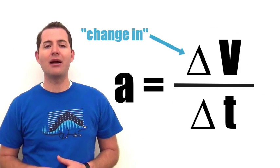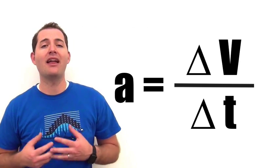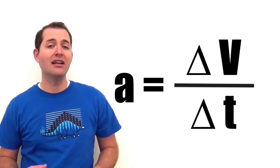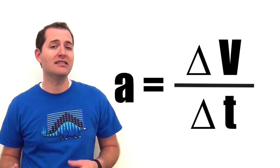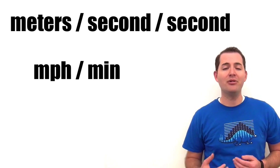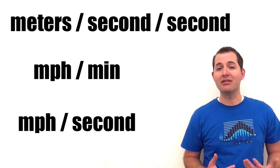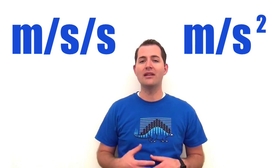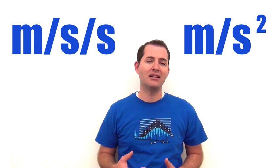We show acceleration by representing the change in velocity divided by the amount of time it took for that velocity change. In this example, that is 4 meters per second change in velocity every second. There are lots of different units we can use for acceleration — for example, meters per second per second, or it could be miles per second, or any combination of a change in velocity divided by time. The standard units of acceleration in physics are meters per second per second, which can also be represented as meters per second squared.